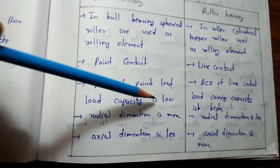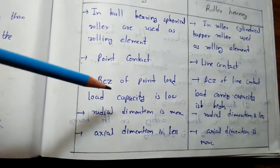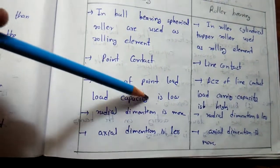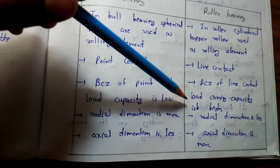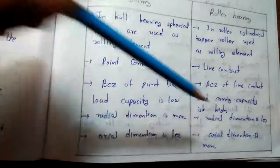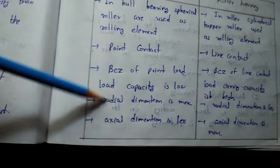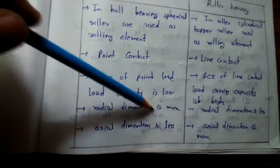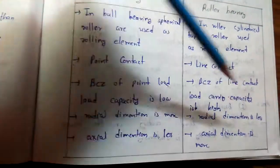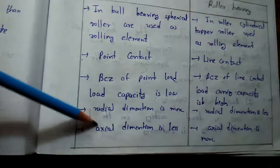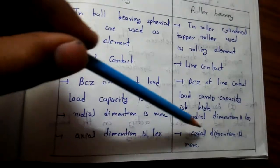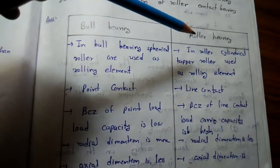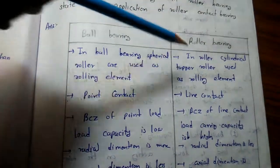Because of point contact, load carrying capacity is low in ball bearings. In roller bearings, load carrying capacity is high. Radial dimension is more in ball bearing and less in roller bearing. Axial dimension is less in ball bearing and more in roller bearing.